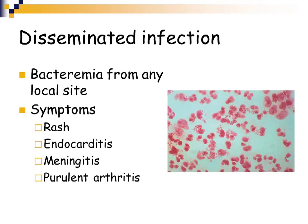Another complication of gonorrhea is that it can disseminate from any local site of infection, get into the bloodstream, and cause a bacteremia. Symptoms of disseminated infection include a rash, endocarditis (infection of the lining around the heart), meningitis, and arthritis. This disseminated infection can cause very severe, chronic, and life-threatening illnesses.